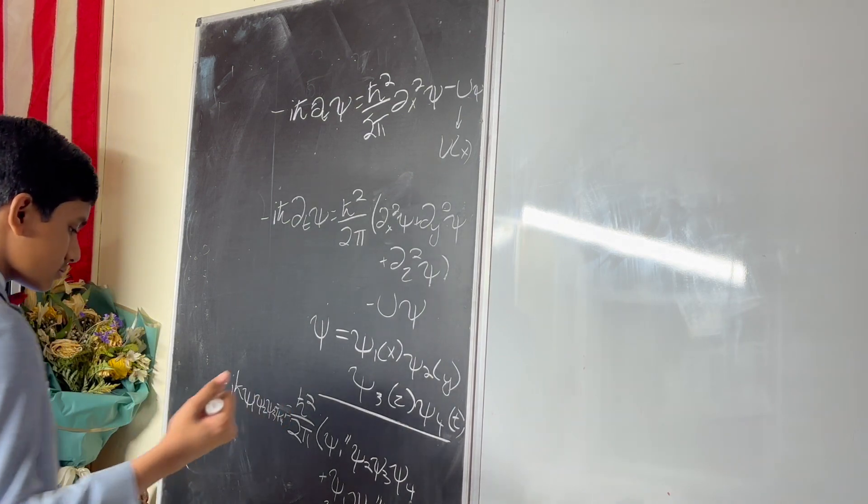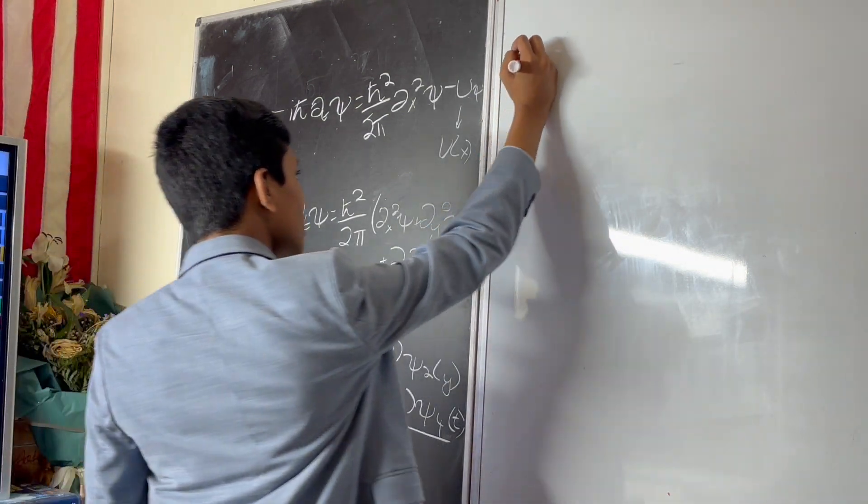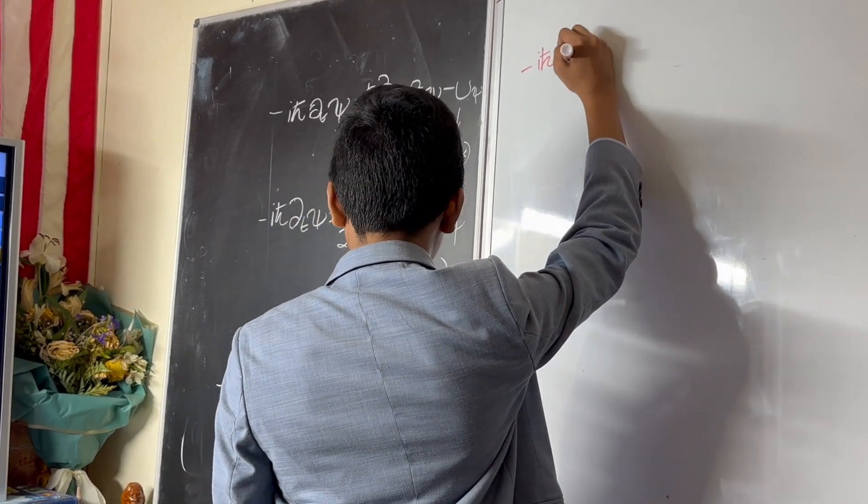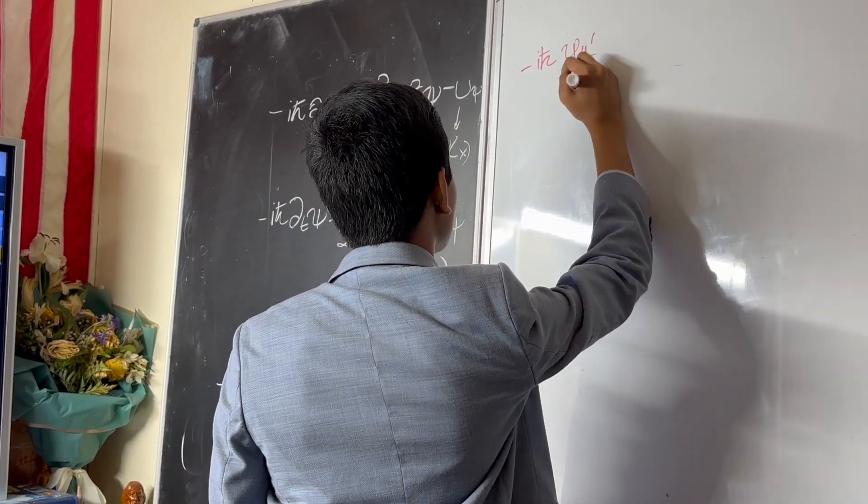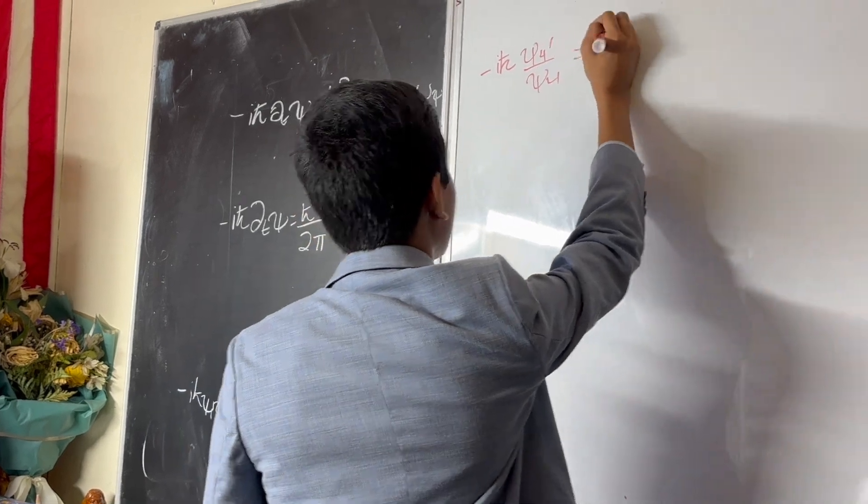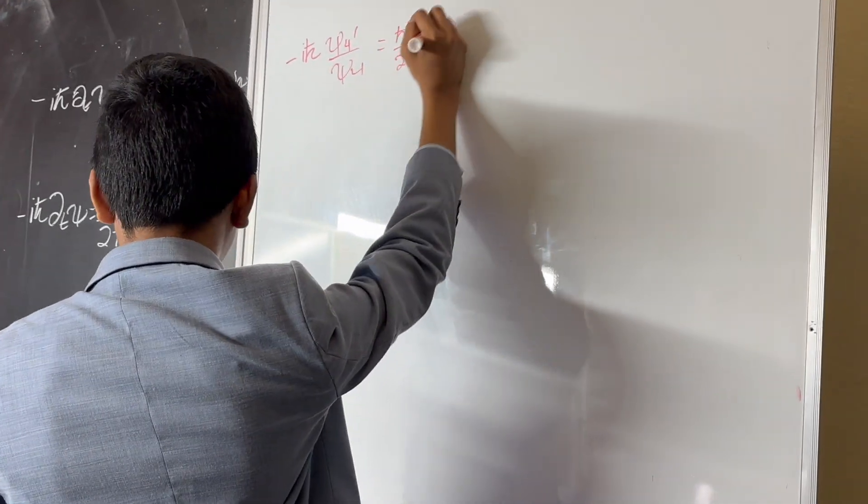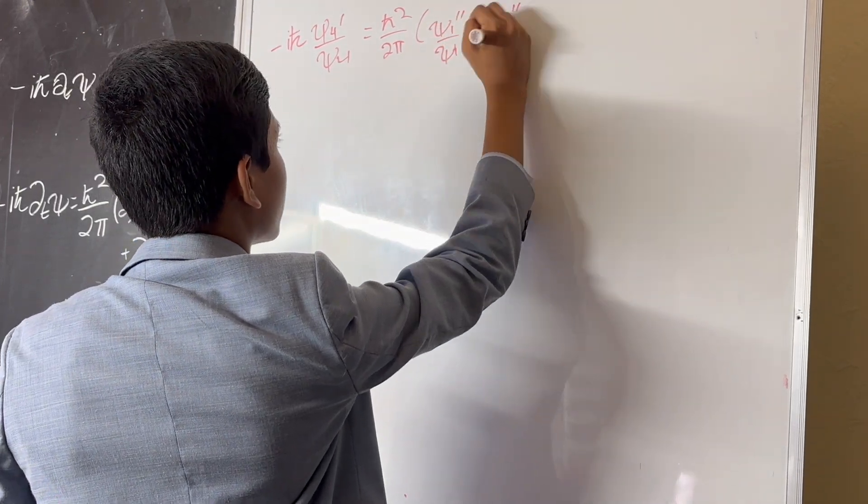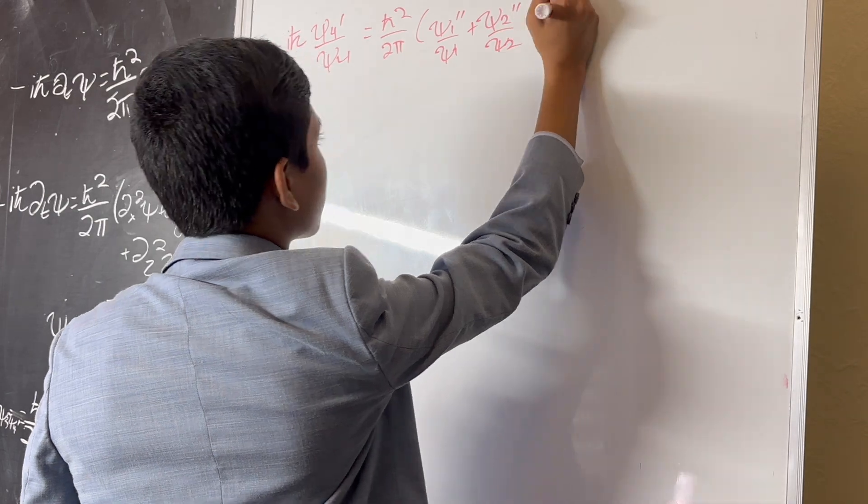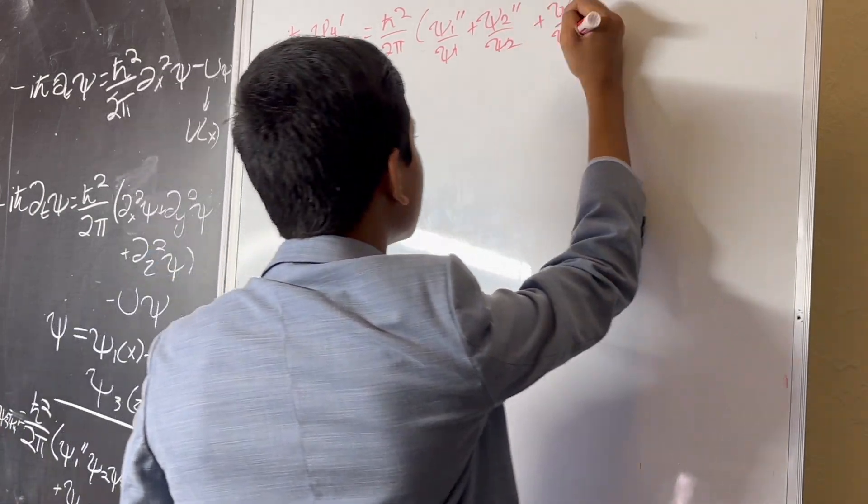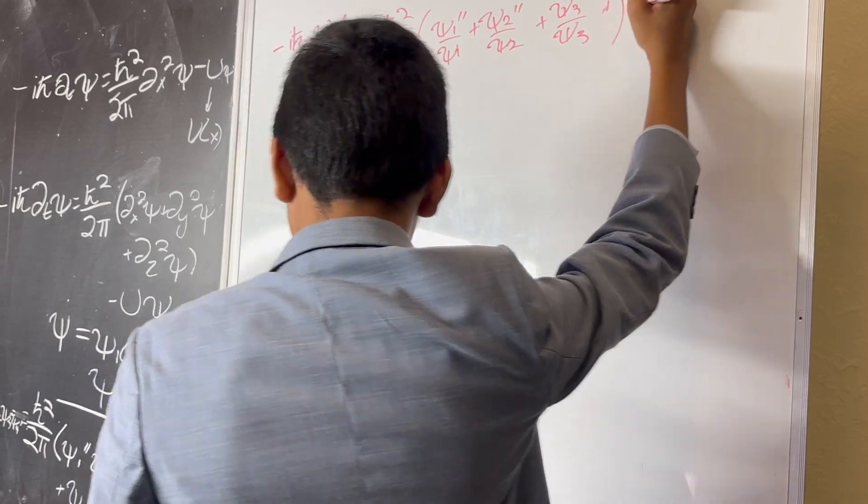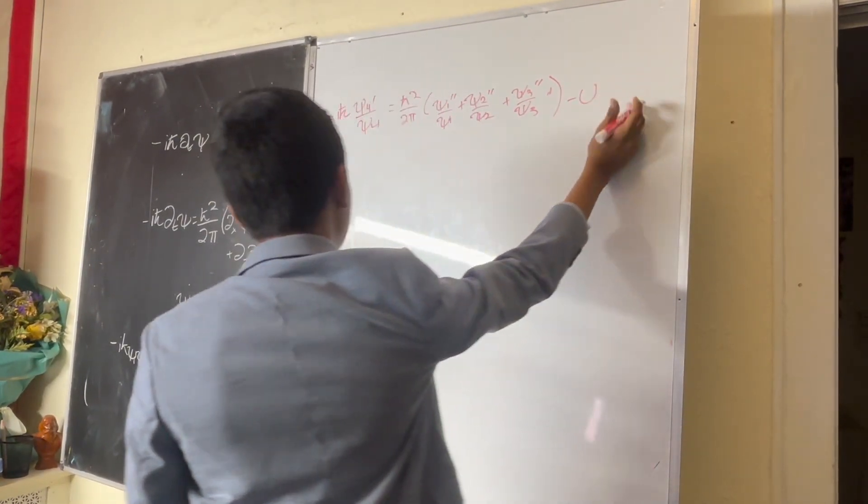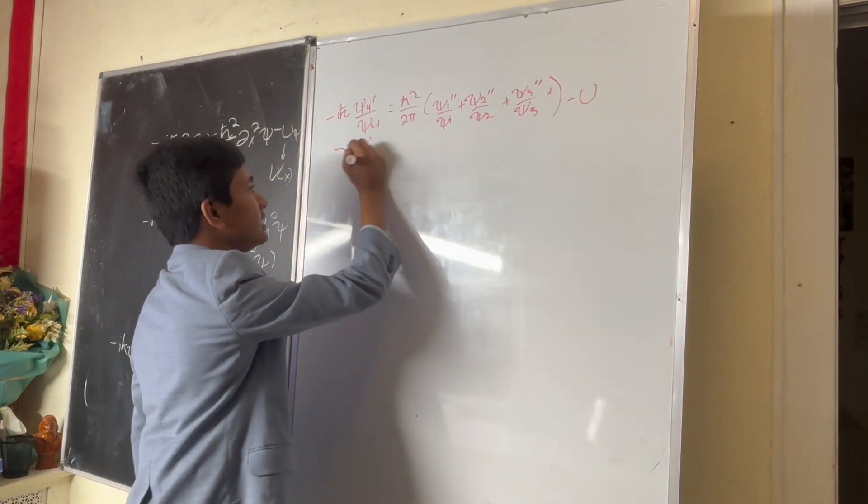Well, we get minus i h-bar psi 4 prime over psi 4, so far so good, equals h-bar squared over 2m, psi 1 double prime over psi 1 plus psi 2 double prime over psi 2 plus psi 3 double prime over psi 3, minus U. And now, things are looking good so far, because this side is a function of t, and this side is a function of x, right?